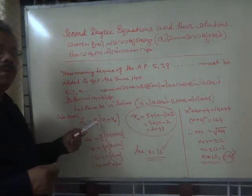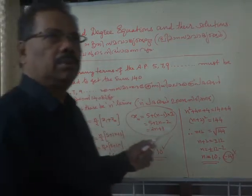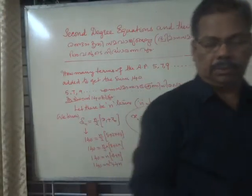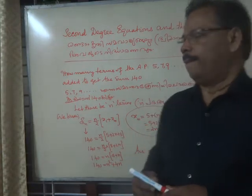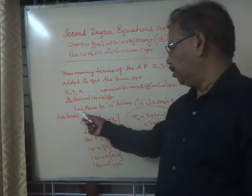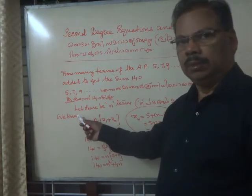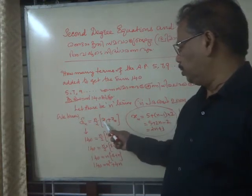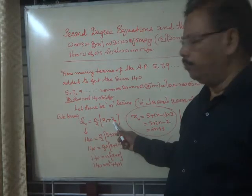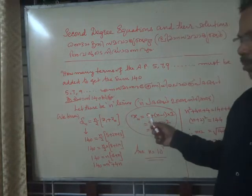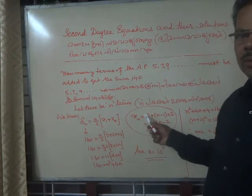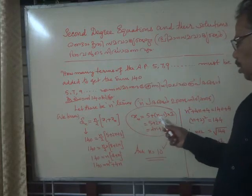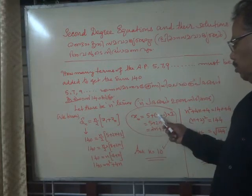The formula for finding the sum to n terms of an AP is Sn, sum to n terms, starting from the first term. Sn is equal to n by 2 into first term plus nth term. And nth term is given by a1 plus n minus 1 times d.